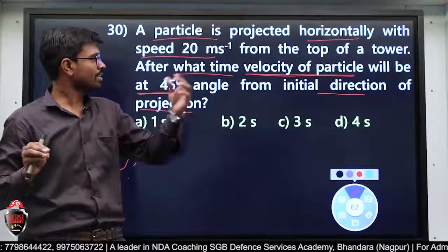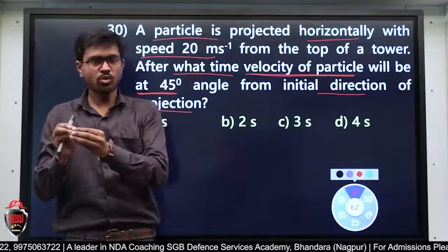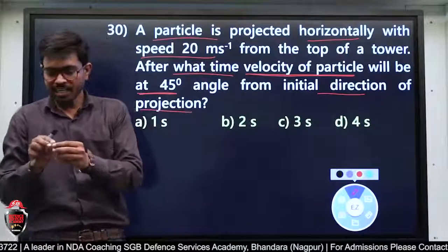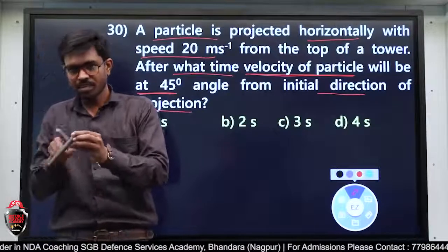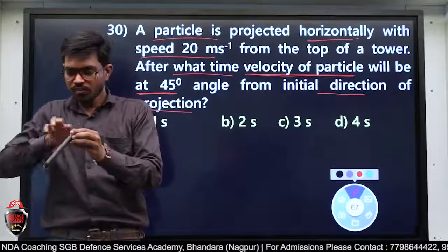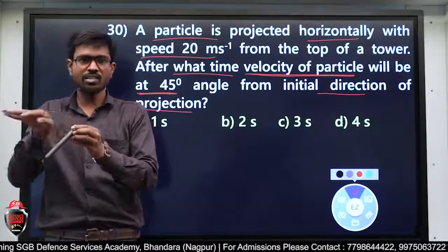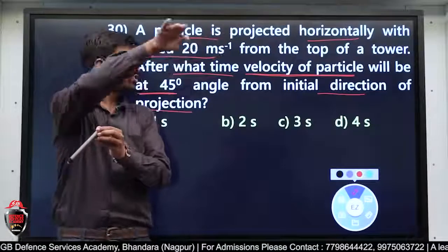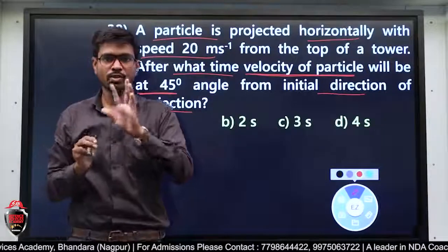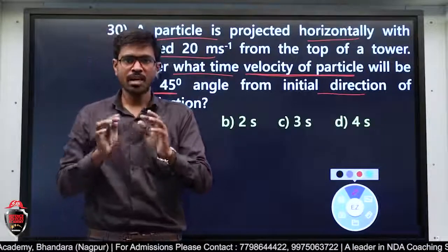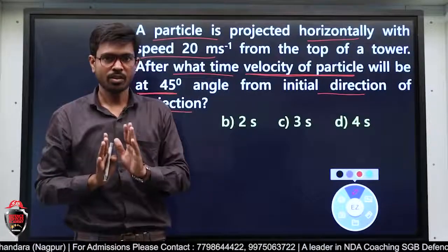The net velocity — यहाँ पर जो total velocity of particle will be at an angle of 45 degree पर होगी horizontal के साथ। यानी initial direction of projection के साथ यह question है। हम इसको diagram बना के solve करते हैं।